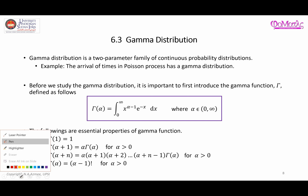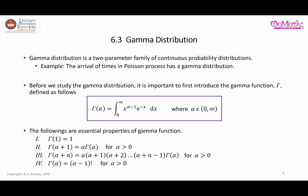Assalamualaikum warahmatullahi wabarakatuh. In this video, I'm going to give a little bit of introduction related to gamma distribution. This is a two-parameter family of continuous probability distributions. For example, the arrival times in a Poisson process has a gamma distribution.